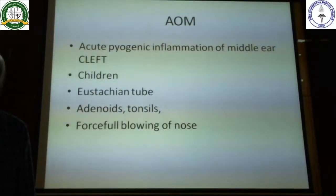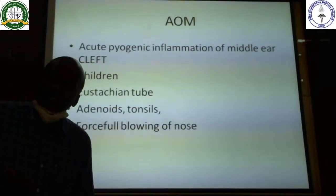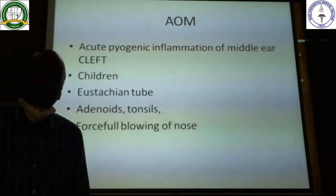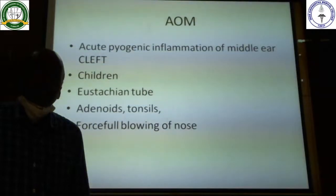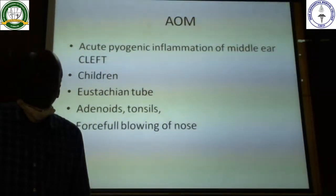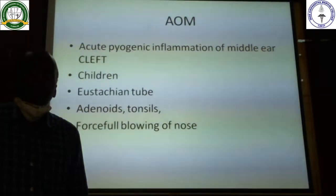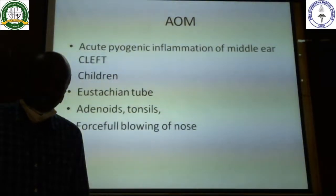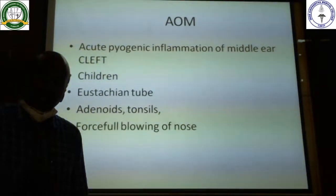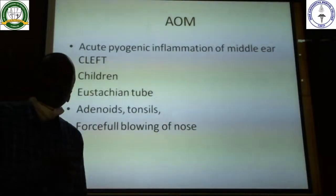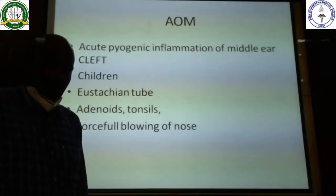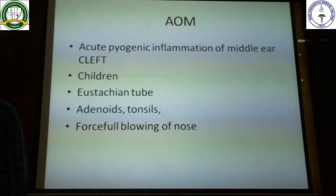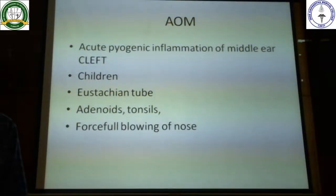The middle ear cleft involves your middle ear, mastoid, and Eustachian tube. The reason I'm insisting on this point is that inflammation is not limited to the middle ear — it starts from the Eustachian tube, then goes into the middle ear, and from there into the mastoid. This is predominantly a disease of children, though adults can also have acute otitis media.